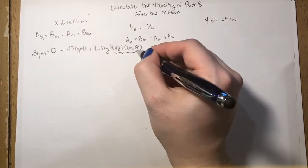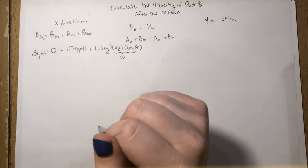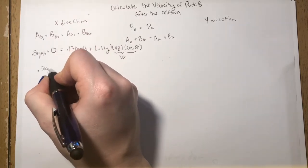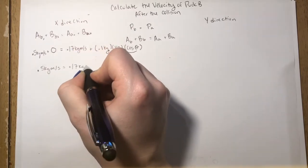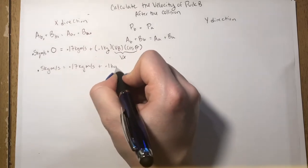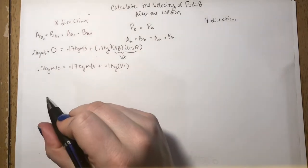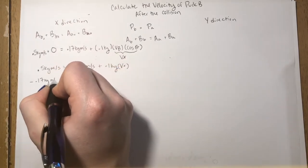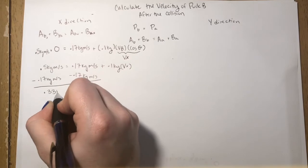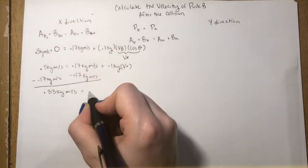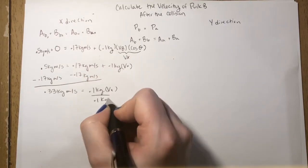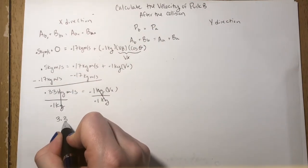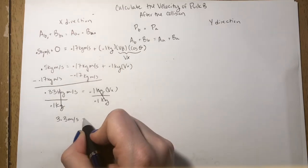We're going to simplify and write Vx for the velocity and cosine of the angle because we're just going to solve for the velocity currently. So 0.5 plus 0 is 0.5. We got 0.1 Vx. So what we're going to do is subtract 0.17 from both sides to get 0.33 kilograms meters per second, and then divide by 0.1 kilograms. Kilograms get crossed off, and we are left with velocity in the x direction as 3.3 meters per second.